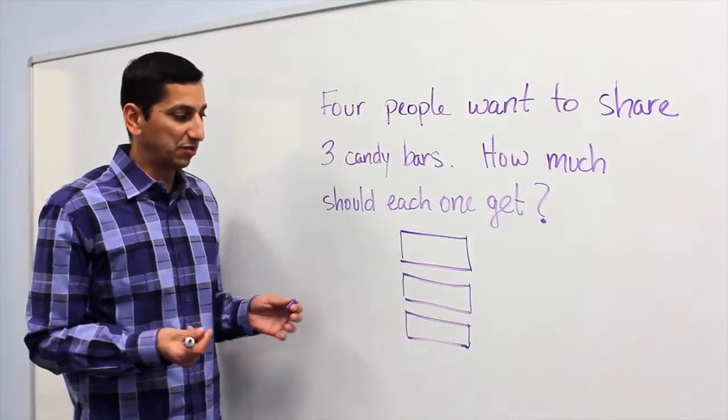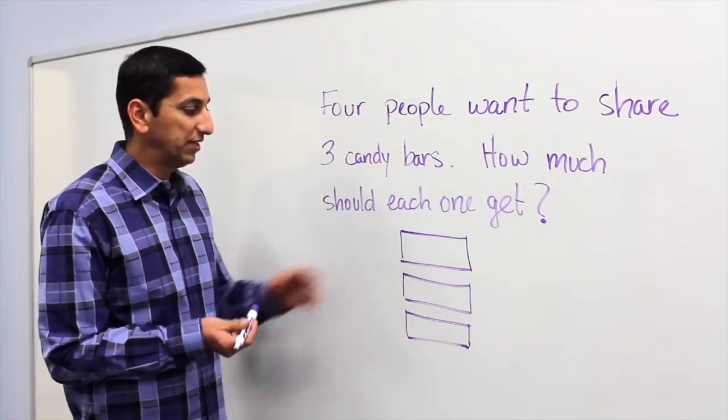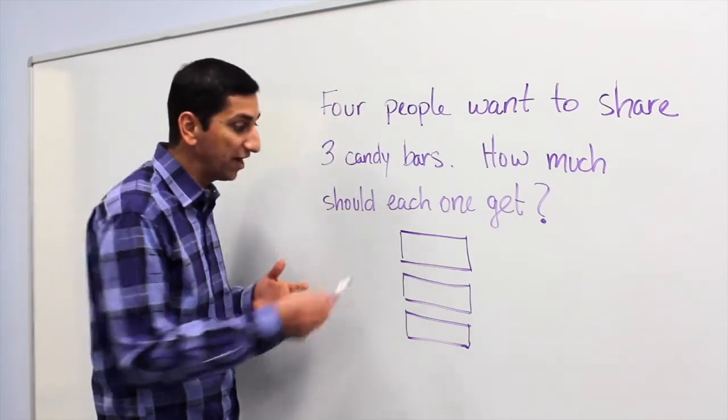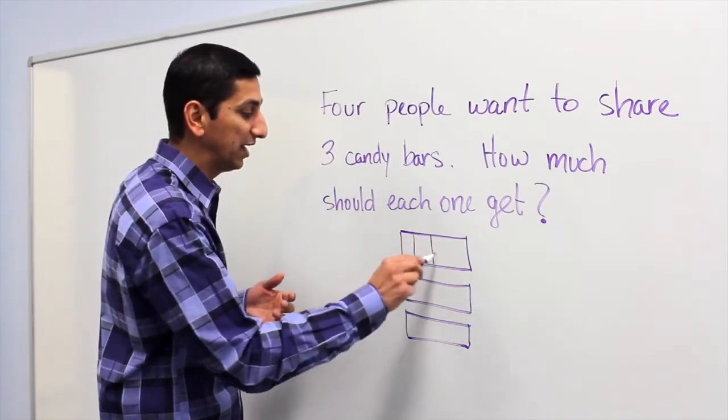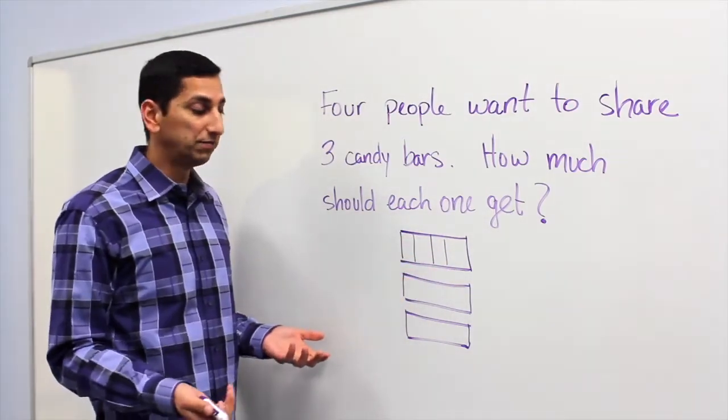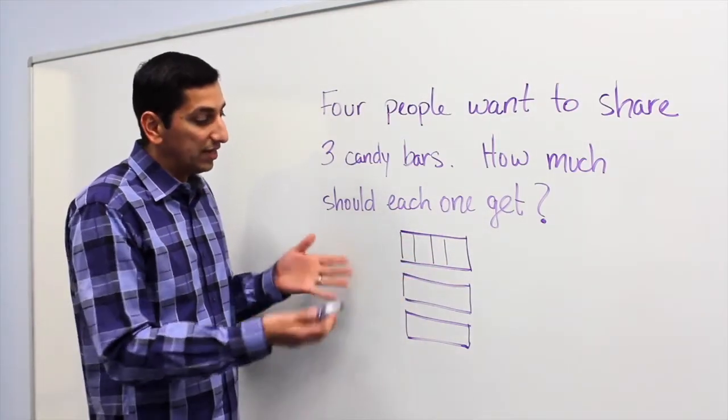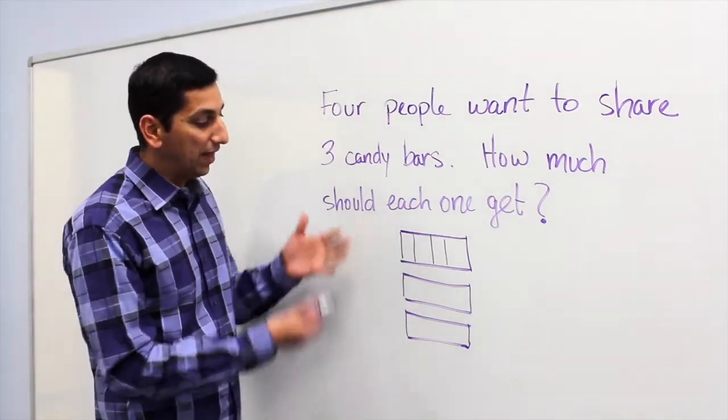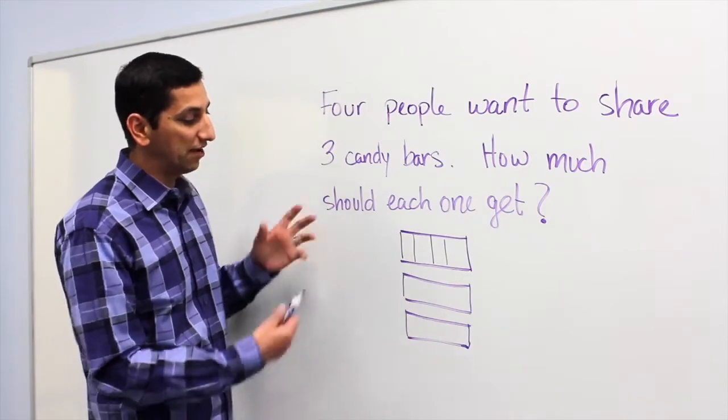So again, let's look at what would a simpler question be. Well, what if we looked at this one candy bar and want to split this amongst four people? That I know how to do. I can break it in half twice into fourths and I know each person would get a quarter. Okay, now we have a picture that your child can start to reason with and then you let them figure things out from there.